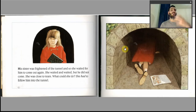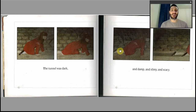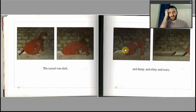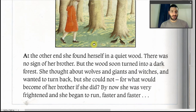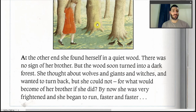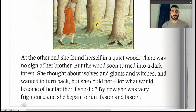The tunnel was dark and damp and slimy and scary. If the author had listed 'the tunnel was dark, damp, slimy and scary,' each adjective wouldn't have that impact. He wants you to stop at every adjective: 'The tunnel was dark and damp and slimy and scary.' So she crawls in. At the other end she found herself in a quiet wood. There was no sign of her brother, but the wood soon turned into a dark forest. She thought about wolves and giants and witches and wanted to turn back, but she could not — for what would become of her brother? She began to run faster and faster.